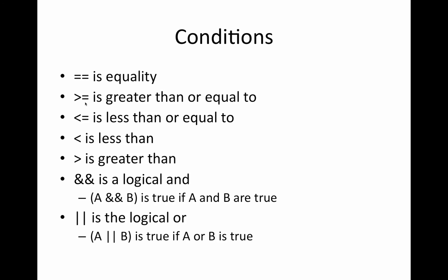A greater than sign and an equal sign is greater than or equal to. A less than sign and equal sign is less than or equal to. Less than, greater than, double and is the logical and. So it's like if condition a and condition b are both met. So say Jameson number greater than seven and Jameson number less than nine.